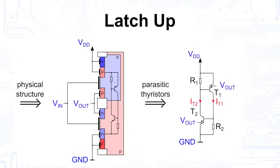Here we see the parasitic thyristor T1, which can be ignited by a voltage spike at the input of the CMOS gate. The resulting current flow creates a voltage drop across resistor R2, which in turn ignites thyristor T2.